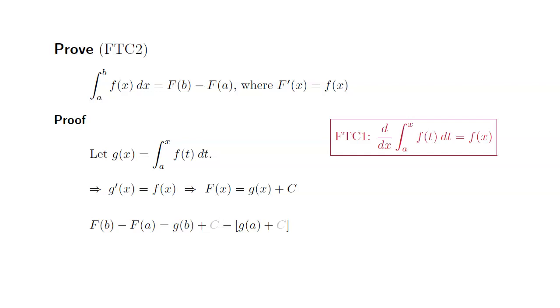Also, if you look at g(a), g(a) is the integral from a to a, so it's actually zero. So we only have g(b), which is the integral from a to b of f(t) dt.